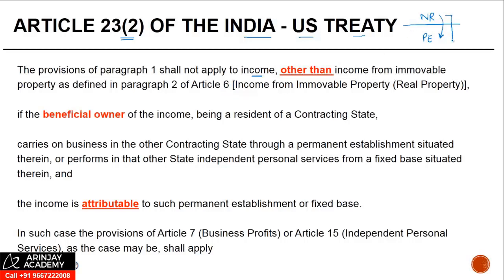What this means is: if a non-resident has a PE in India and also has immovable property, the PE income — other than income from that immovable property — shall not be covered under Article 23(1), but shall be covered under Article 23(2). So paragraph 1 of Article 23 in the India-US treaty shall not apply to any such income.